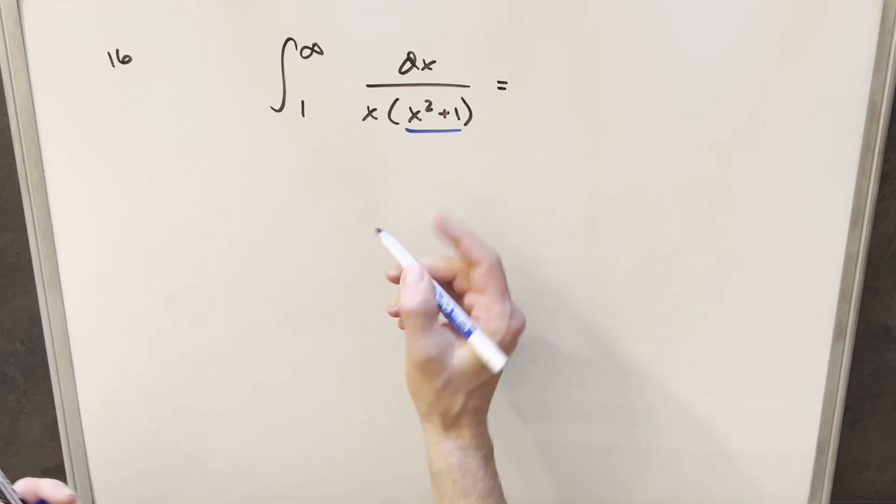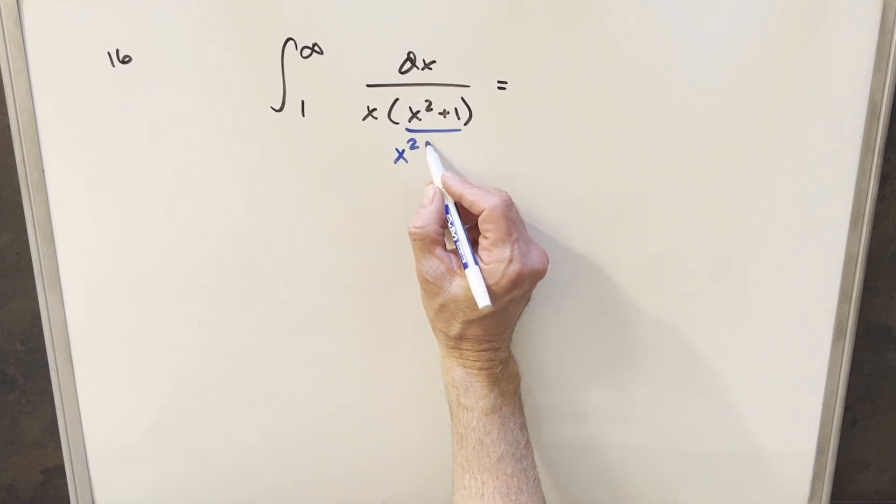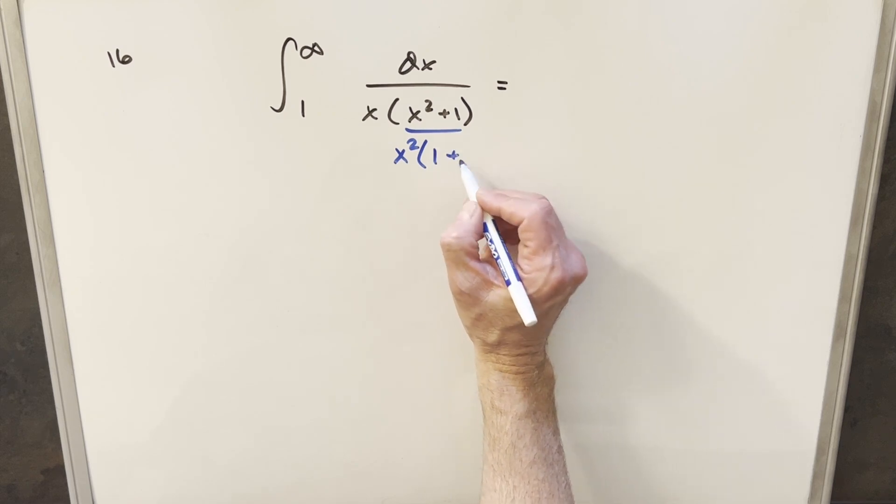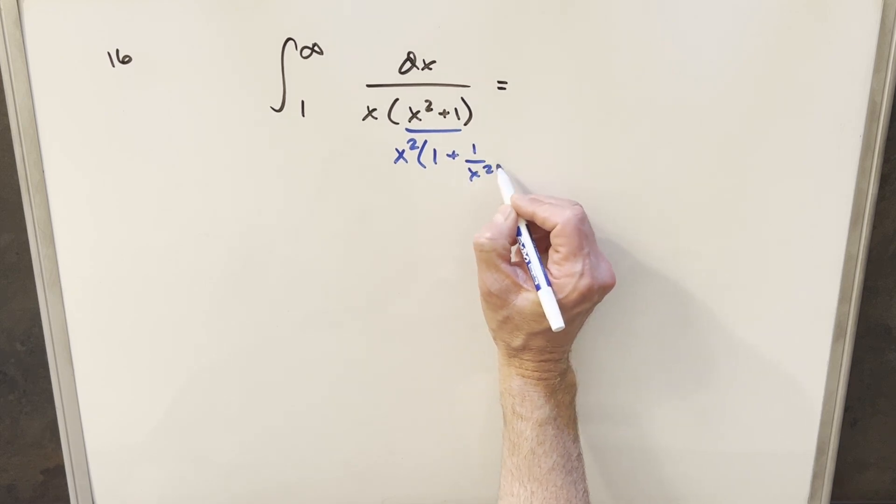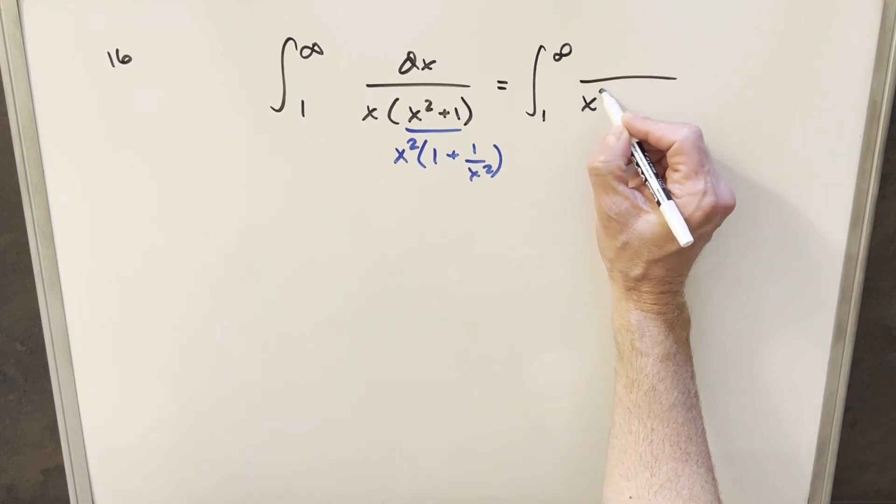Okay, so for my first step we're going to take this and just factor this piece. I'm going to factor an x squared out of this and write this as x squared times 1 plus 1 over x squared. Now, rewriting this, multiplying x times x squared, we're going to have x cubed in the denominator.